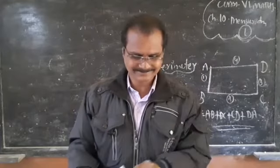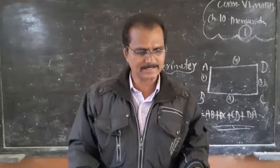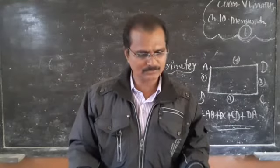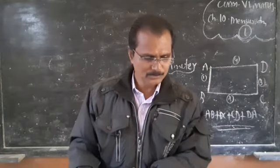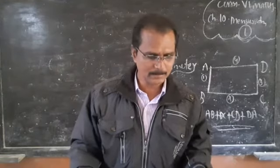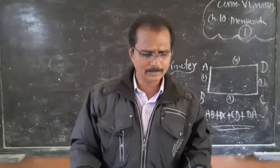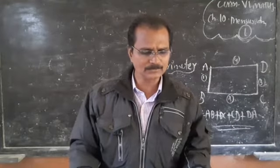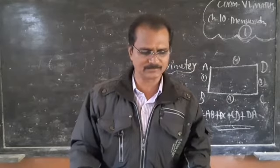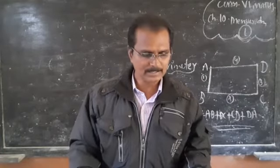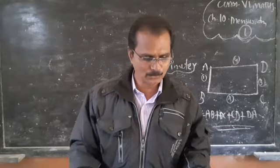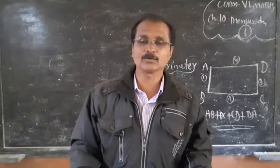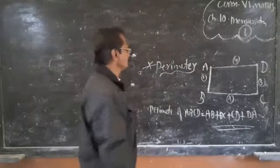Very simple. The perimeter of the rectangle is AB + BC + CD + DA — that is, the sum of the lengths of its four sides. Perimeter of a rectangle equals the sum of the lengths of the four sides.